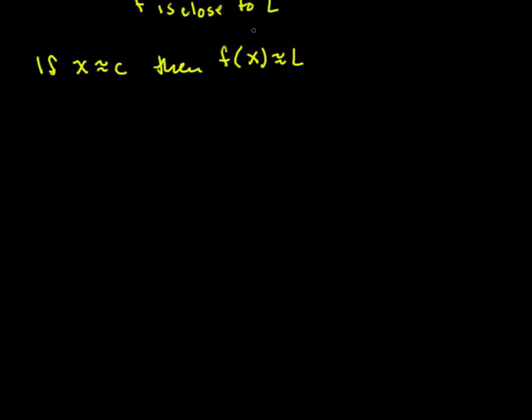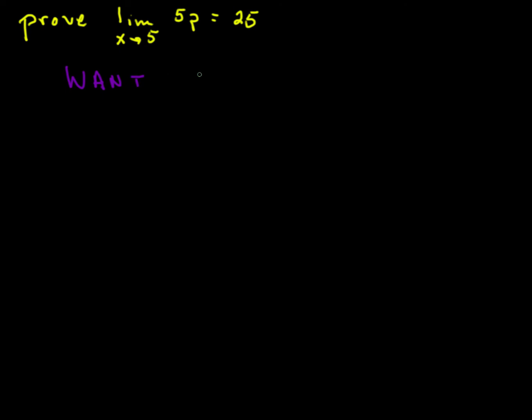Let's look at this in play. So let's prove that the limit as p approaches 5 of 5p is equal to 25. Now we know this is a continuous function, so this is a no-brainer. But I want to use the epsilon-delta argument to show that this is true. So how does it work? I'll typically start with what I want to be true. I want that |5p - 25|, their distance away from each other, is less than some epsilon, some positive real number epsilon. I want that to be true.